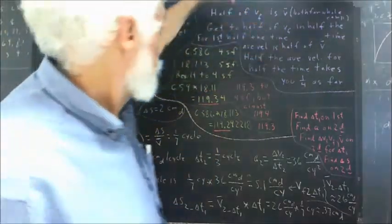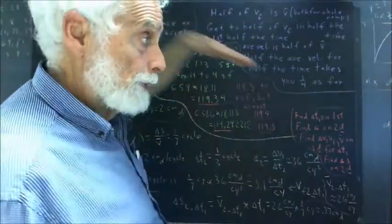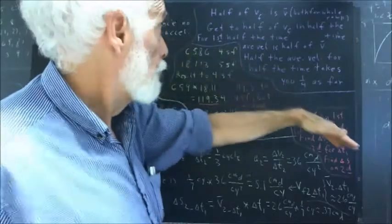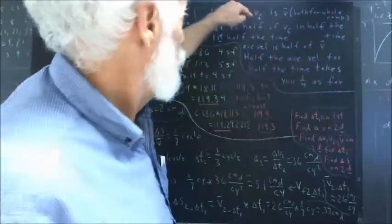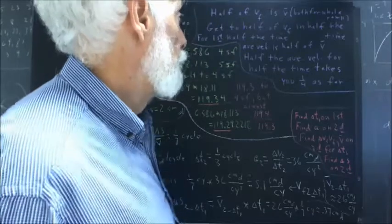Another summary. If you achieve velocity Vf rolling from rest down a ramp, then half of Vf is Vbar, as you can easily verify.